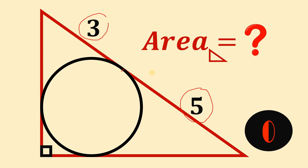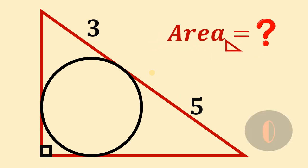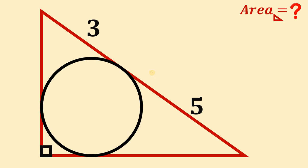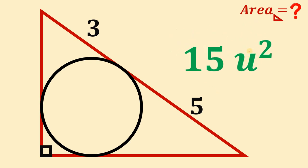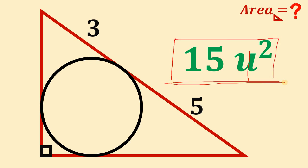Now let's answer this question together. Before we show the solution, let's have the final answer first. The final answer is simply 15 square units. Now the question is: how do we get 15 square units? Here is our solution.